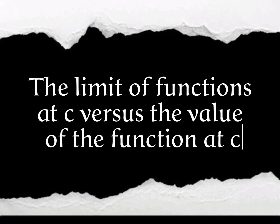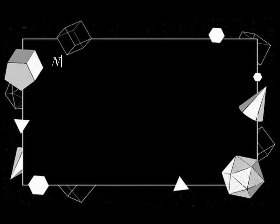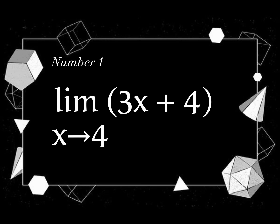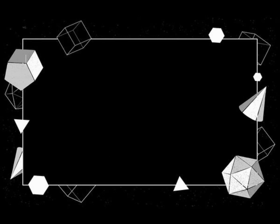The limit of a function at C versus the value of the function at C. Number 1: the limit of 3x plus 4 as x approaches 4. The first step we will do is the table of values to determine if the function of x is equal.